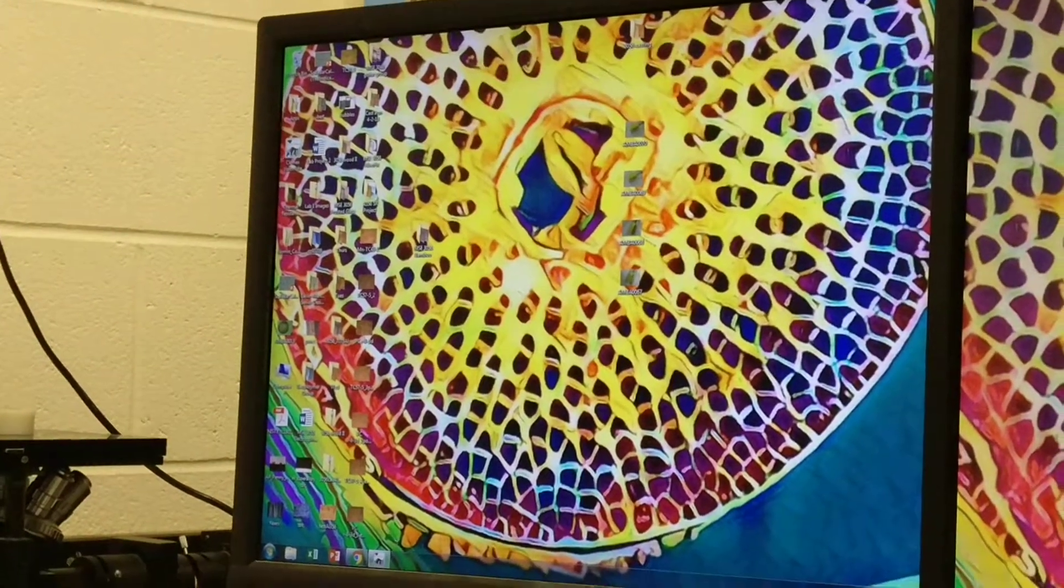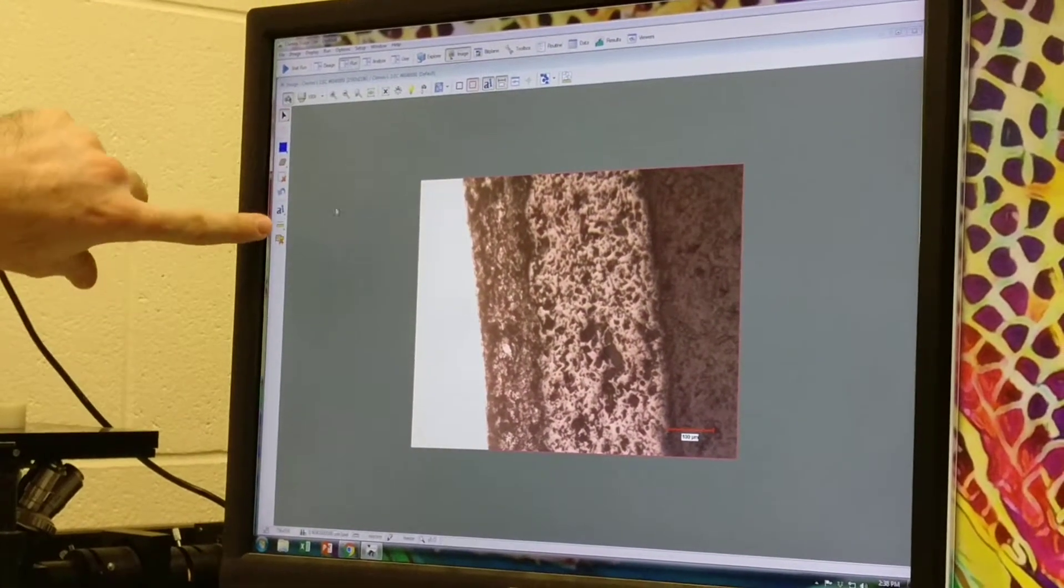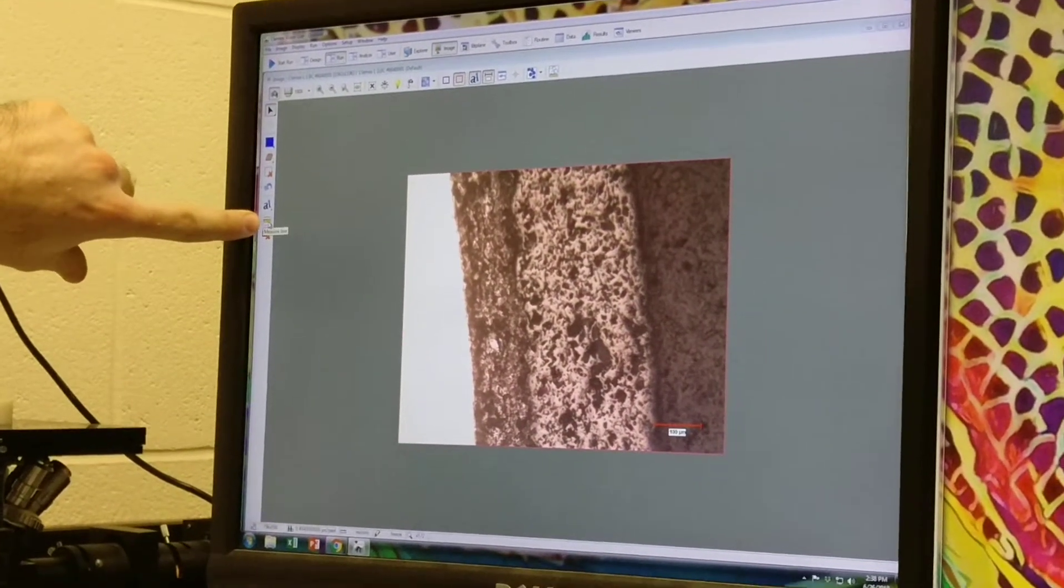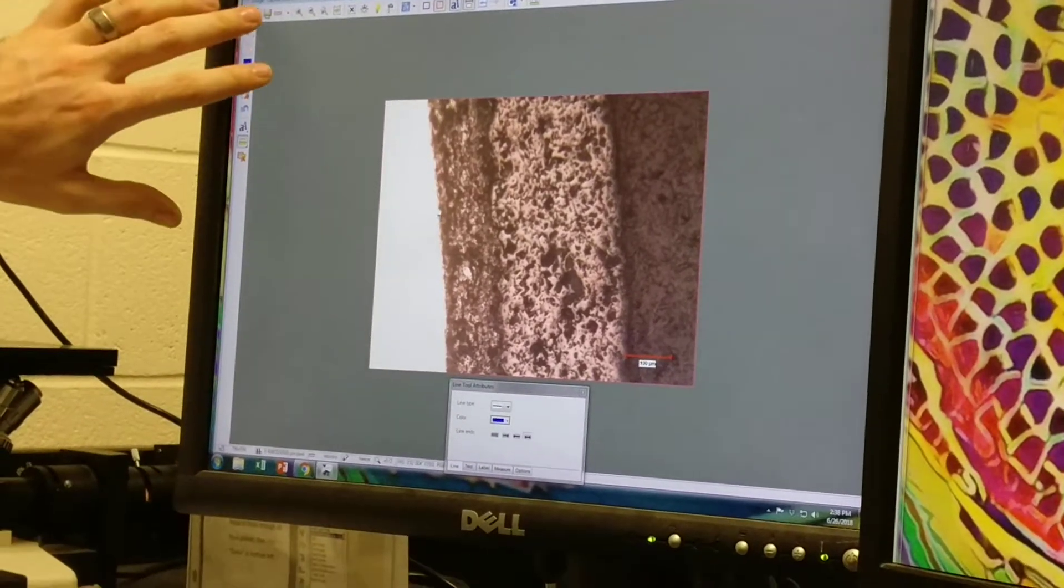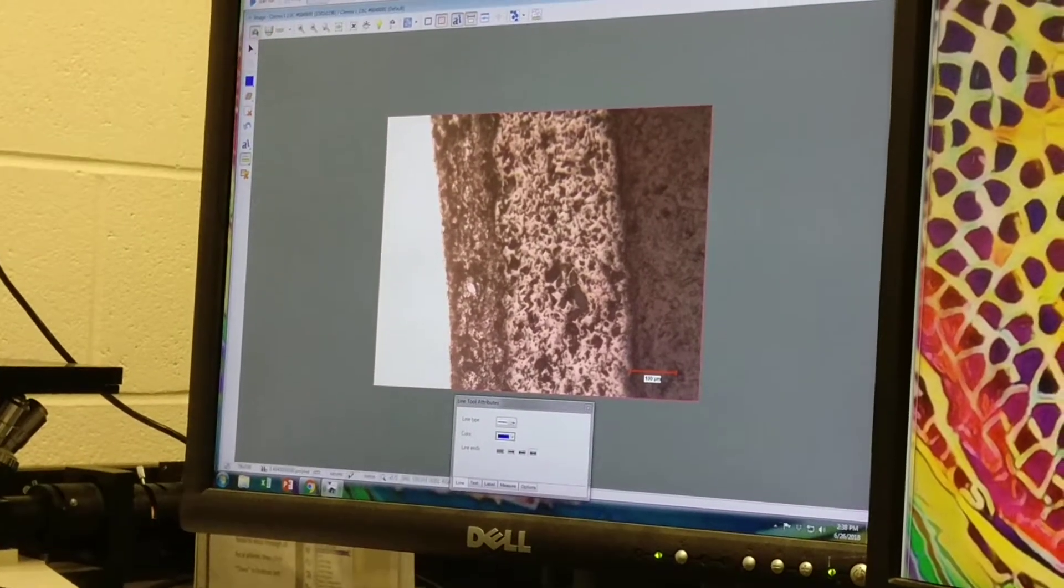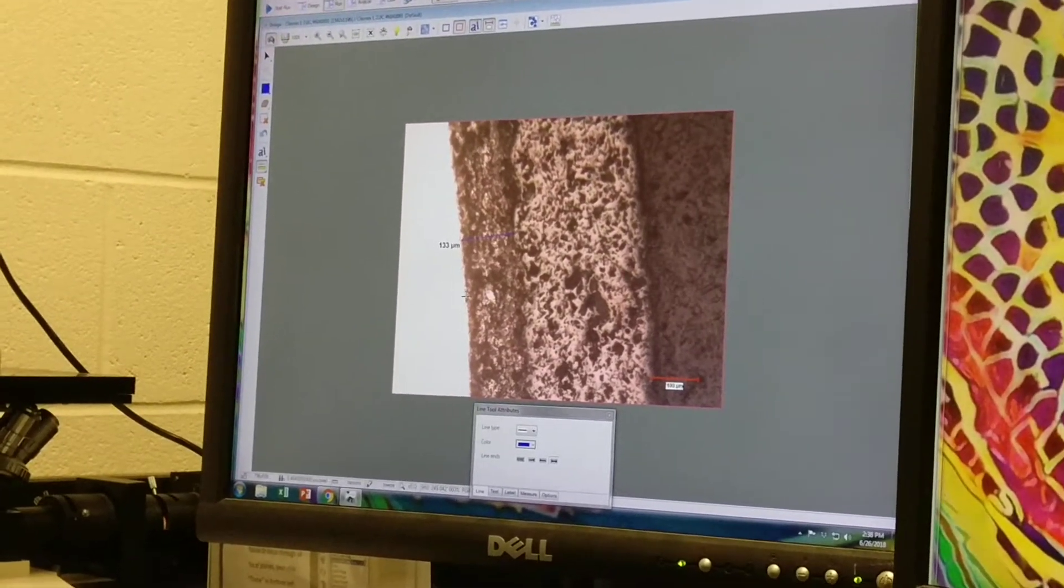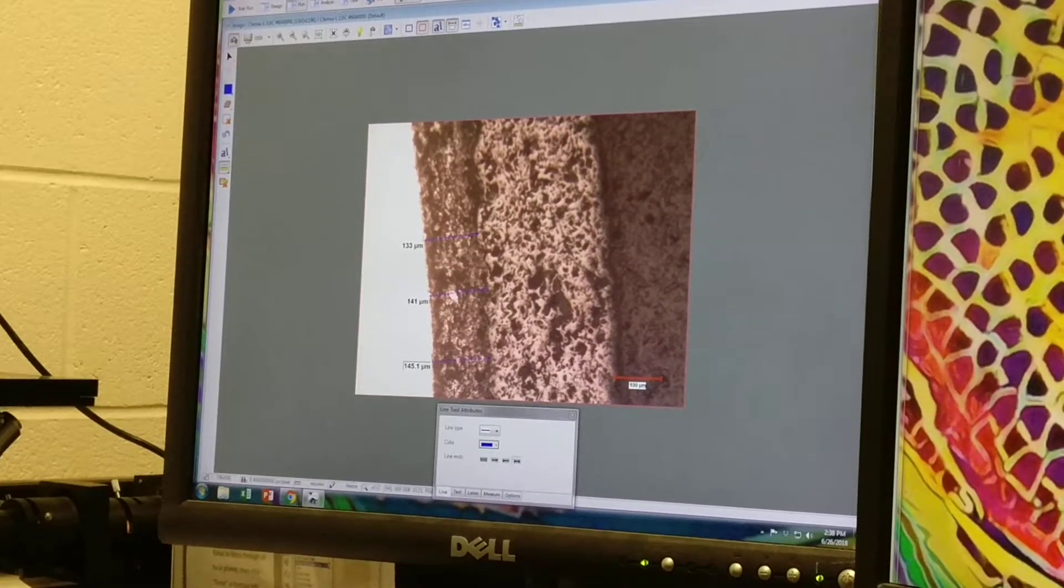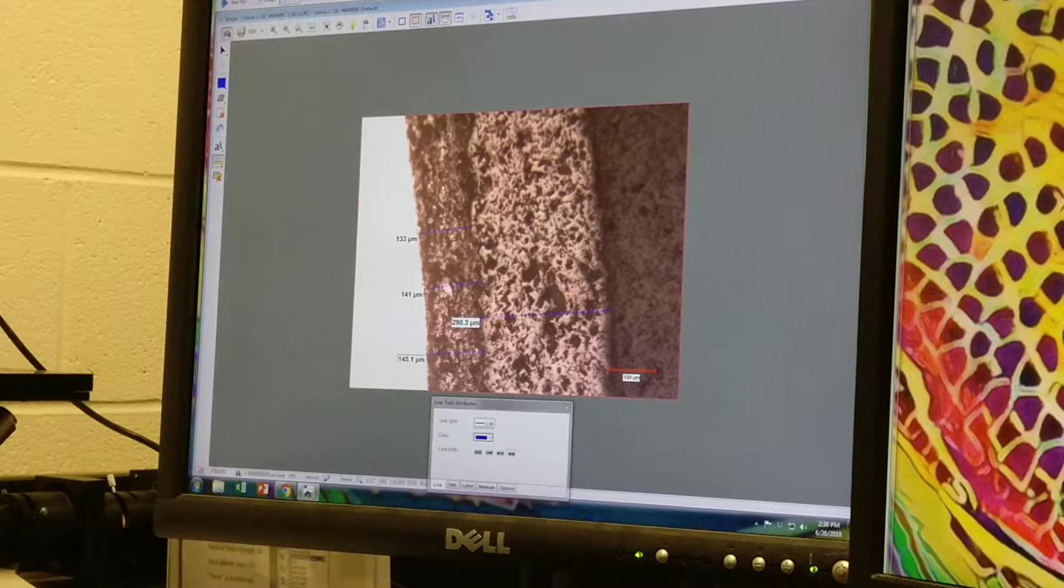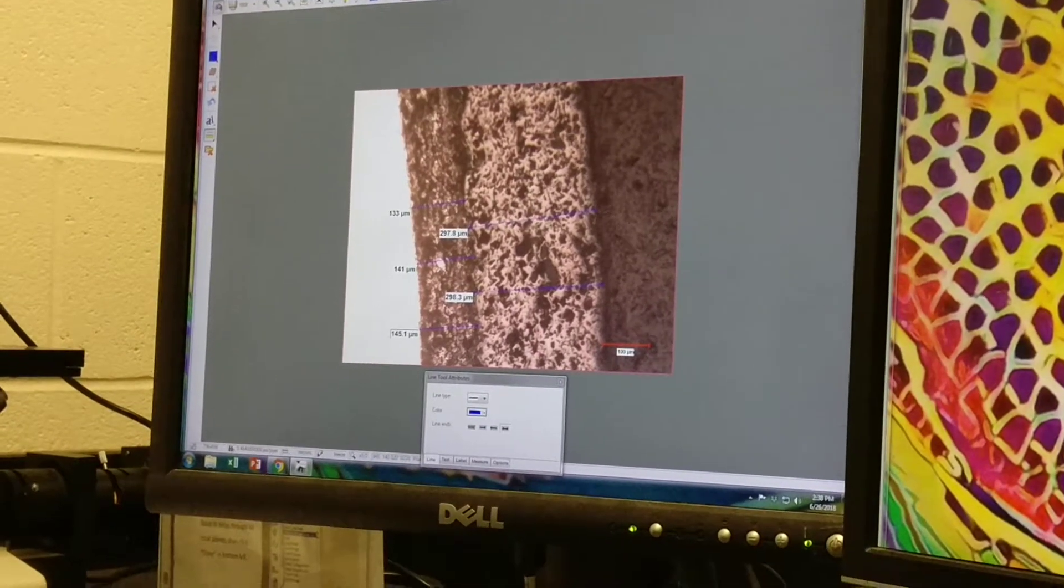Now if we want to measure the thickness of those layers, we'll go back to our software and we're going to click this little ruler button over here to measure a line. Make sure that we're on the correct magnification here. We'll click and drag from one interface to another. We'll do maybe an average of three lines on both layers and take the average and standard deviation of those measurements for our report.